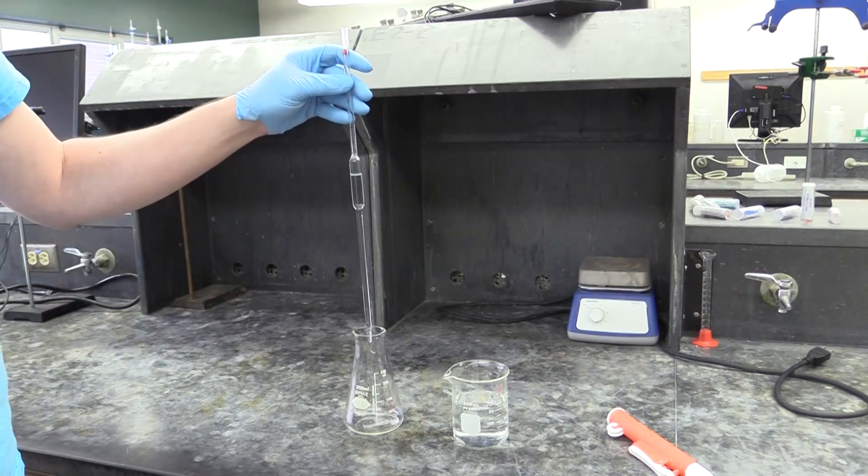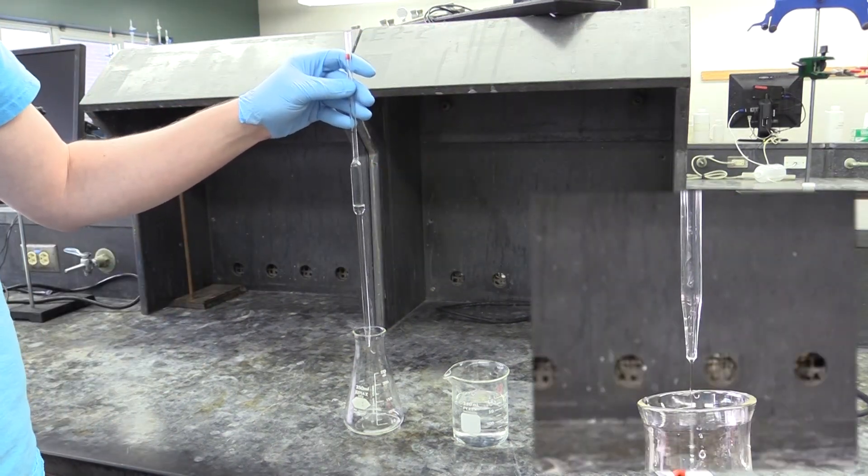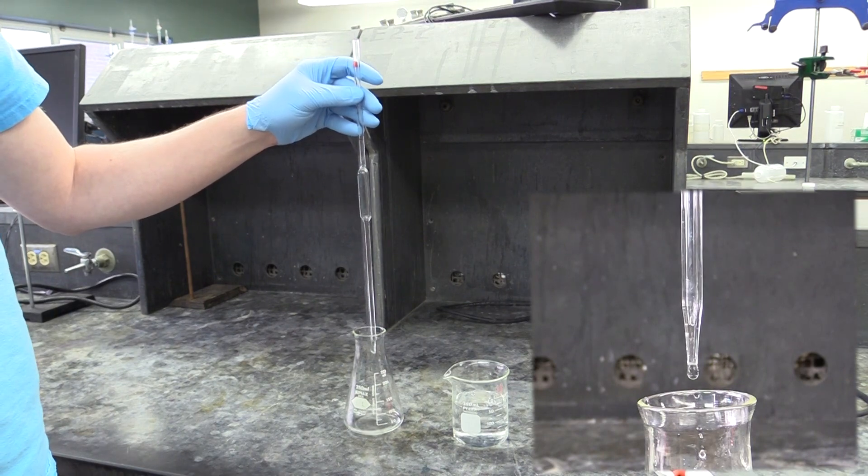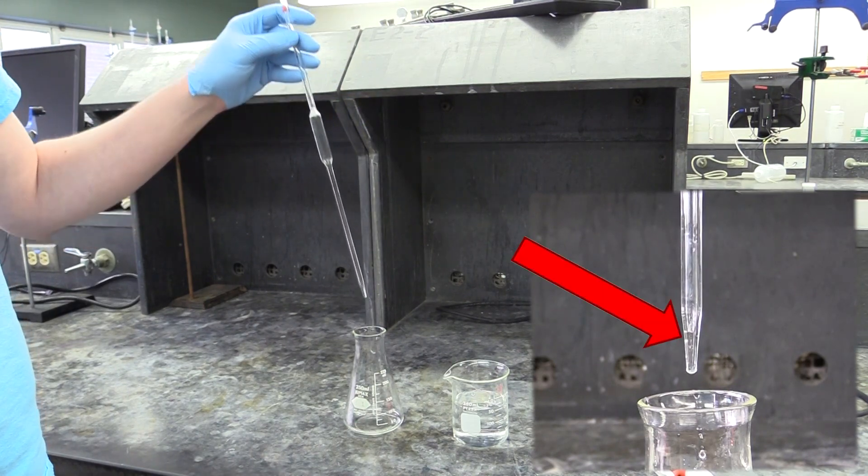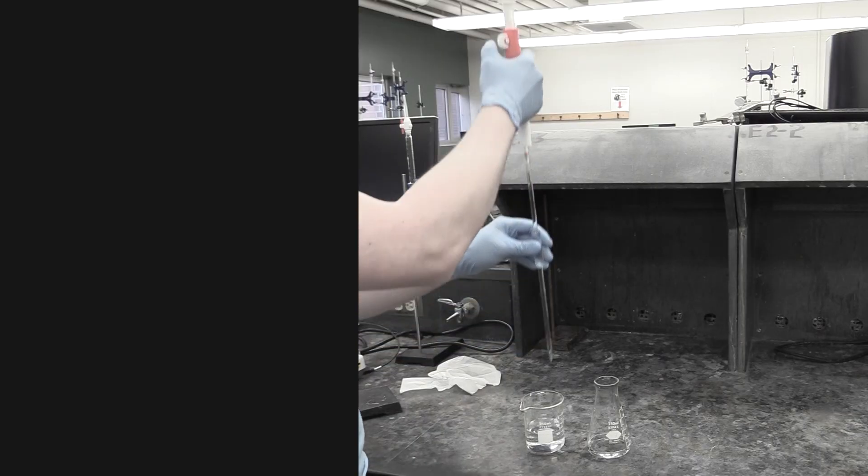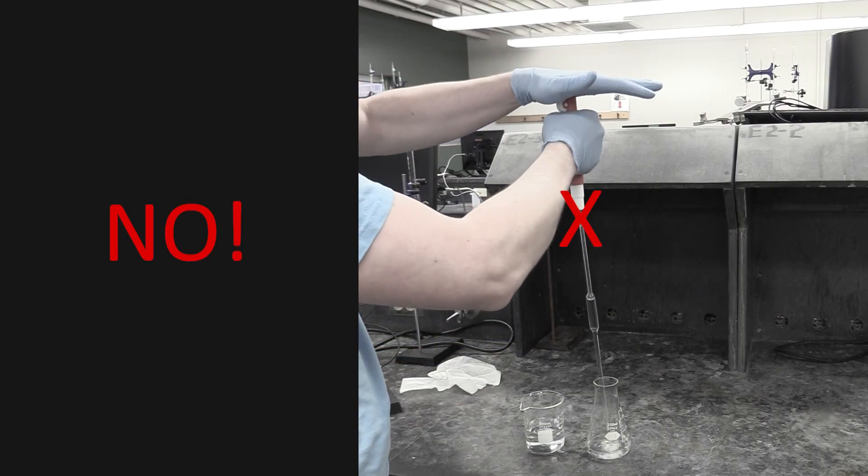When you go to dispense the liquid into your flasks, just let it gravity drain. A little bit of the liquid will stay behind in the tip. This is normal, and the pipette is calibrated for it. It's also the reason why you don't want to blow the pipette out with your pump.